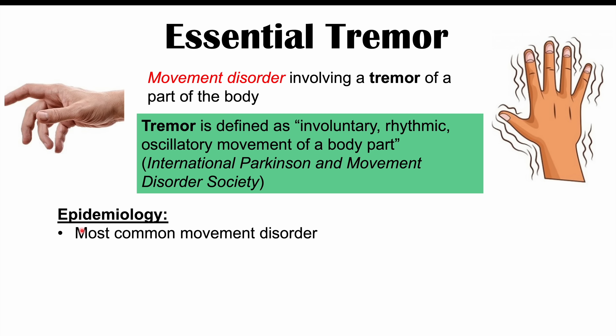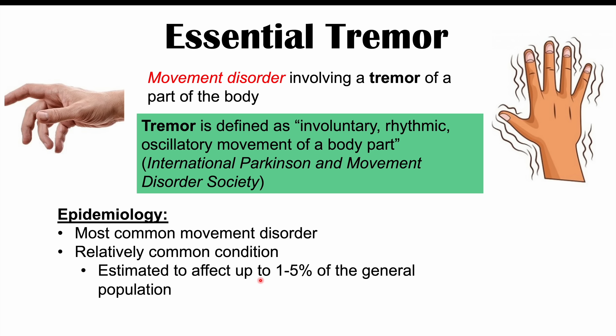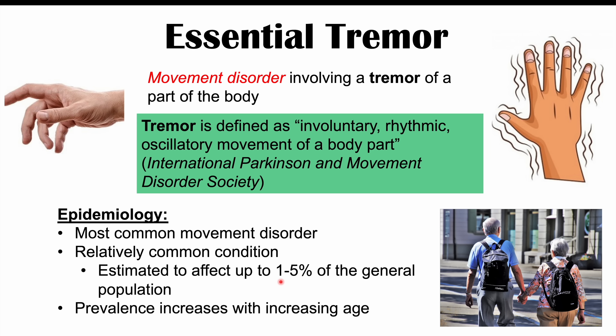Essential tremor is the most common movement disorder and the most common cause of tremor. It is a relatively common condition, estimated to affect up to one to five percent of the general population — some estimates are closer to one percent, others closer to five percent, with most estimates around one percent worldwide. The prevalence of essential tremor increases with increasing age.